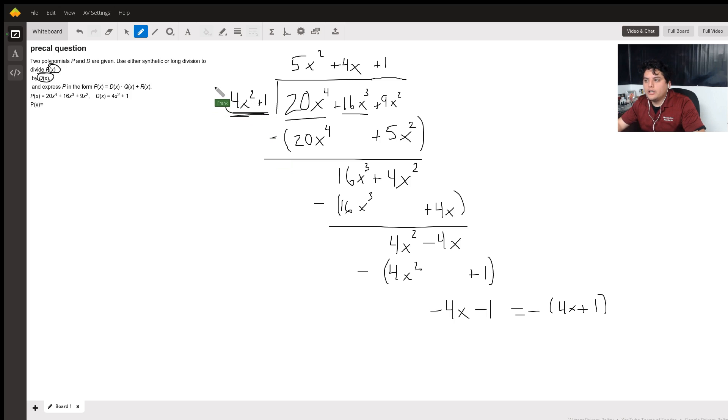So the way that you write that is going to be p of x equals, this is going to be 5x squared plus 4x plus 1. However, I'm going to write here minus 4x plus 1 over 4x minus 4x squared plus 1.